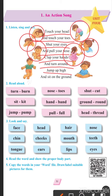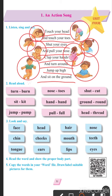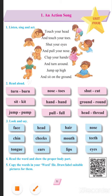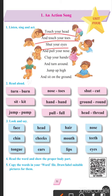Jump up high — what is the boy doing here? He is jumping. Jump matlab kudna. And sit on the ground — look, this girl is sitting on the ground. Zameen pe batna. So students, we will read it once again. Touch your head and touch your toes. Shut your eyes and pull your nose. Clap your hands and turn around. Jump up high and sit on the ground.